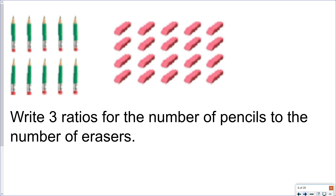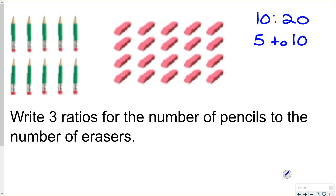So here, if we have pencils and erasers and we want to write three ratios for the number of pencils to the number of erasers, the first ratio we could write is based on the exact number of pencils and erasers, so we could have a ratio of 10 to 20. Maybe we look at them in pairs, and we notice that we have 5 pairs of pencils and 10 pairs of erasers, so we could write that ratio as 5 to 10.